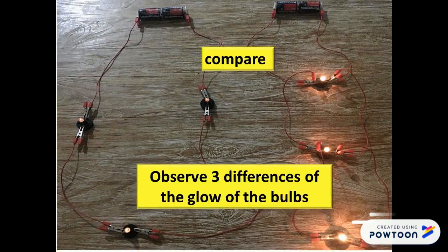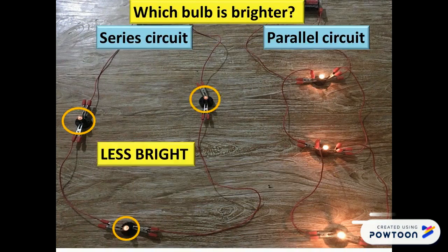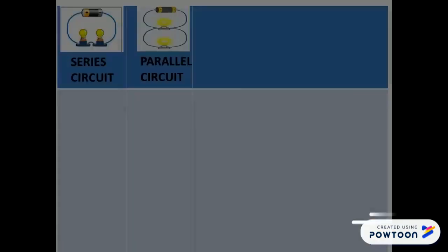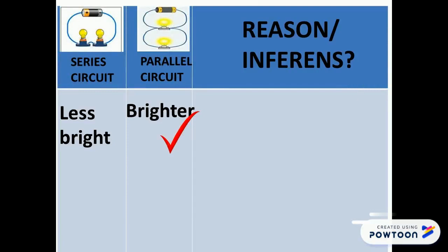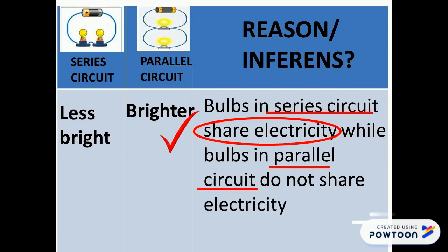Let's compare and observe the three differences of the glow of the bulbs in these circuits. The first difference is: which bulbs are brighter? As we can see, the bulbs in a series circuit are less bright, while the bulbs in a parallel circuit are brighter. This is caused by bulbs in series circuits sharing electricity, while bulbs in parallel circuits do not share electricity.